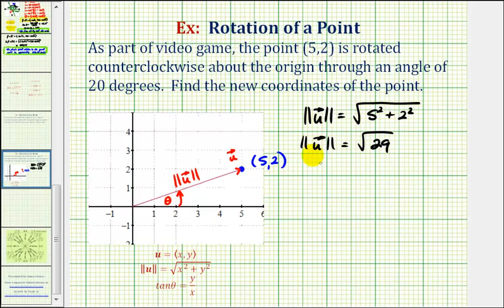Now to determine angle theta, we know tangent theta must equal y divided by x, or in this case, 2 divided by 5. Since tangent theta equals 2/5, that means theta is equal to inverse tangent or arctangent of 2/5.